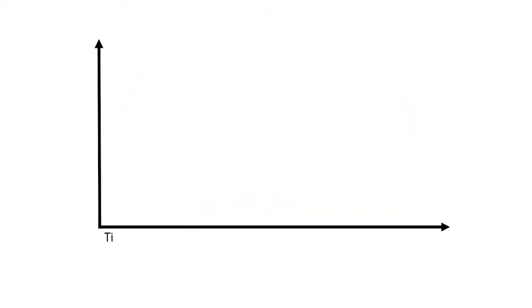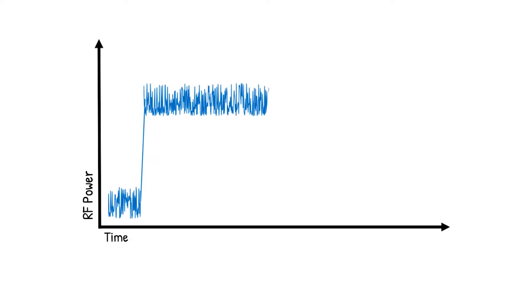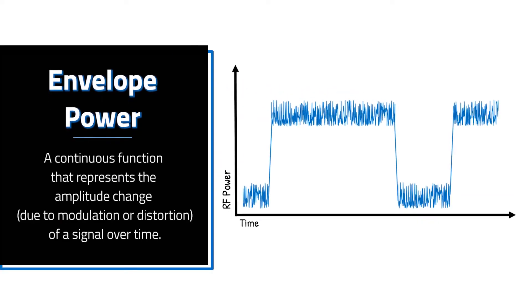Sometimes the term peak power refers to a device under test's envelope power, which is the amplitude change due to modulation or distortion as a function of time, averaged over one or a few cycles of the RF carrier signal.